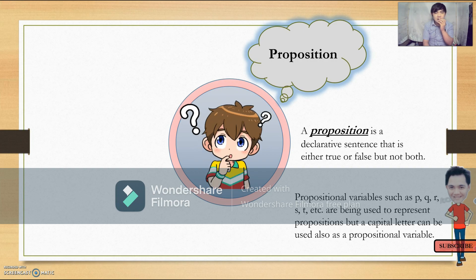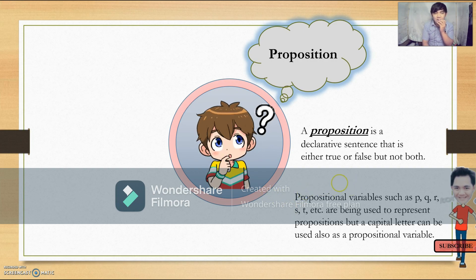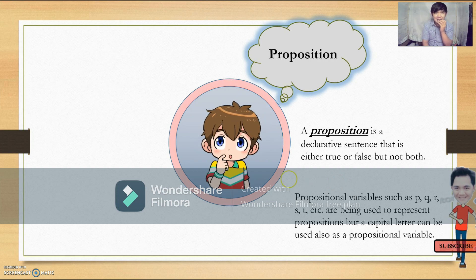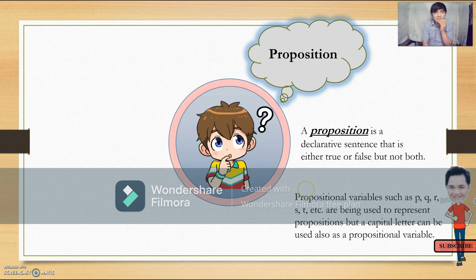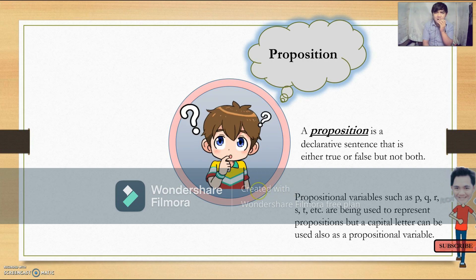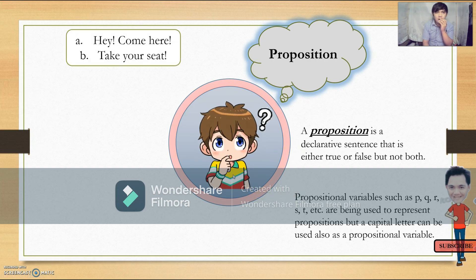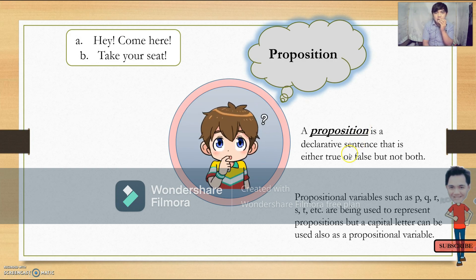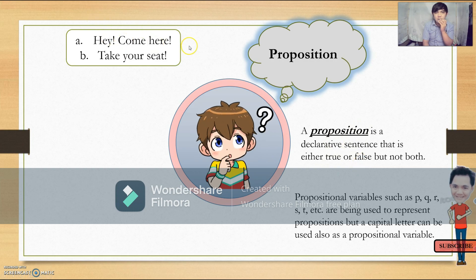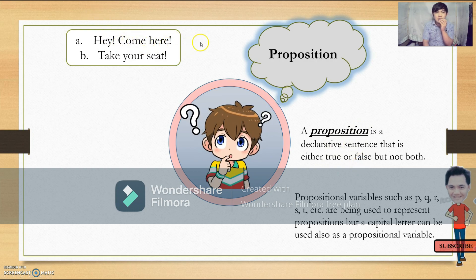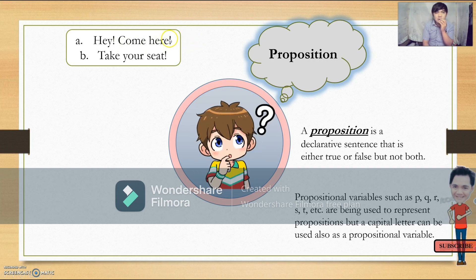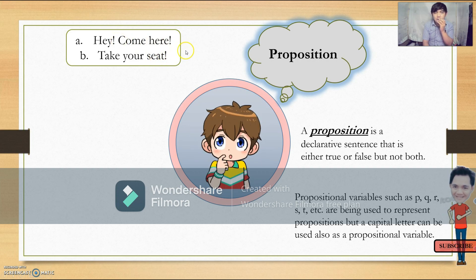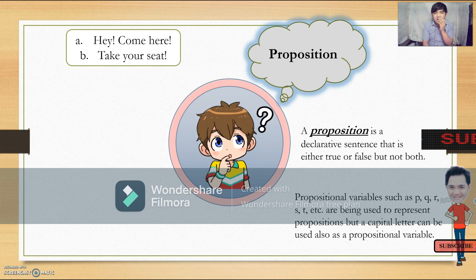Any letter from the English alphabet can be used as our variable, either in a capital letter or in a small letter. Now we are going to assess these sentences to see if they are a declarative sentence or a proposition. "Hey, come here" and "Take your seat" — these are not answerable by true or false. They end with an exclamation mark and they are giving a command, so these sentences are imperative sentences.